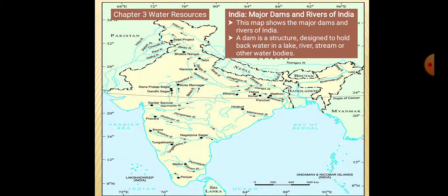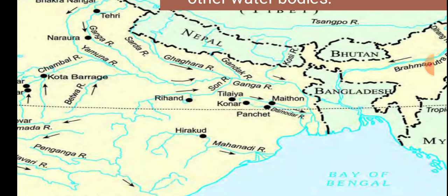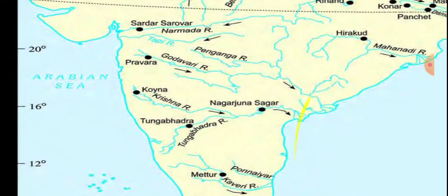Now, the map work is from Water Resources, Lesson number 3, which is only for map work. India's major dams and rivers — you should know them. This map shows the major dams and rivers of India. A dam is a structure designed to hold back water in a lake, river streams or other water bodies. There are different rivers shown with dams over them.